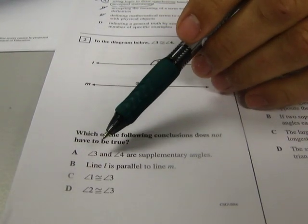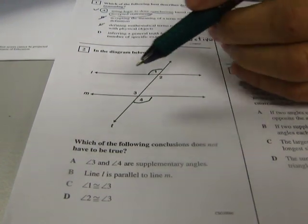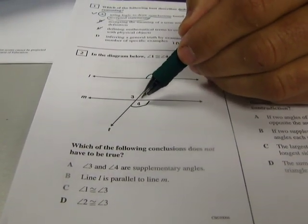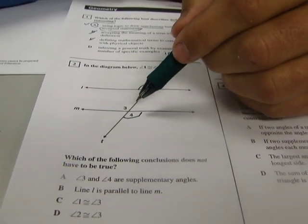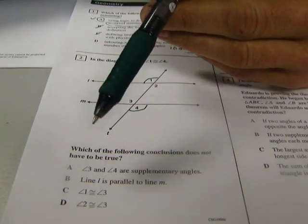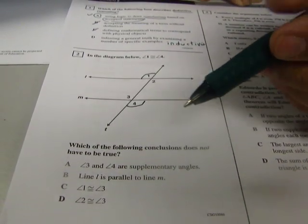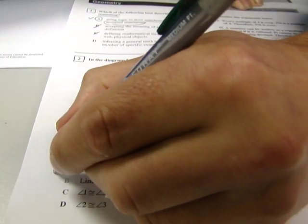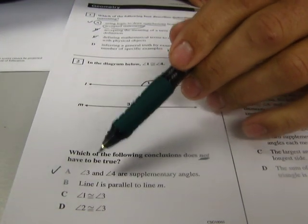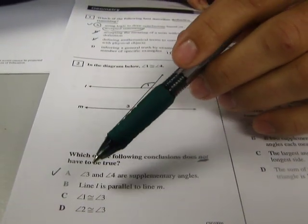So A, angle three and angle four are supplementary angles. Well, here's angle three and angle four. They're definitely congruent, but they're not necessarily supplementary. So this is probably not true. I'm going to say that's probably the answer because after all, it says does not have to be true. So that doesn't sound likely. I think that's probably the best answer in that case.